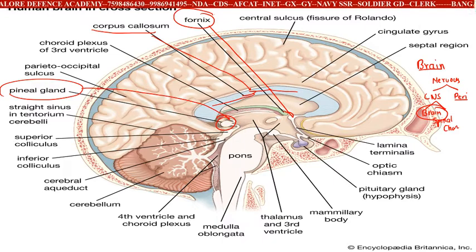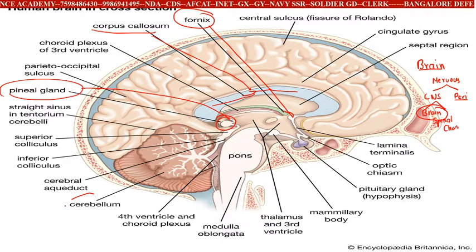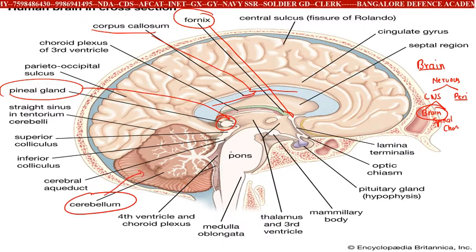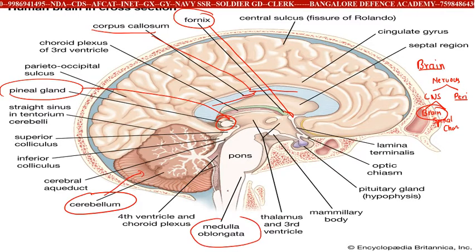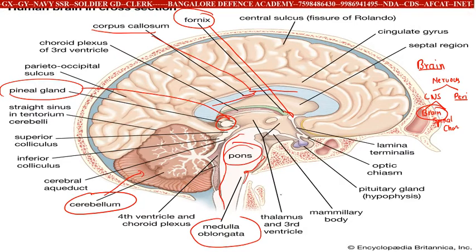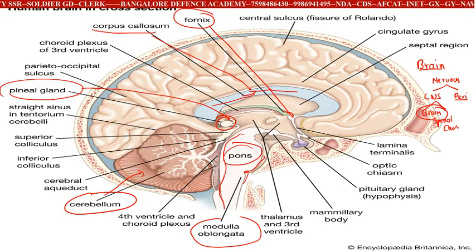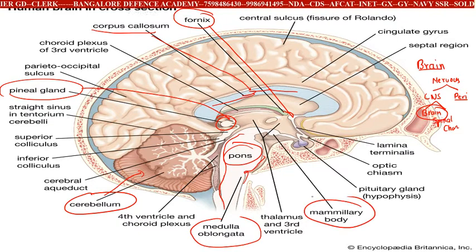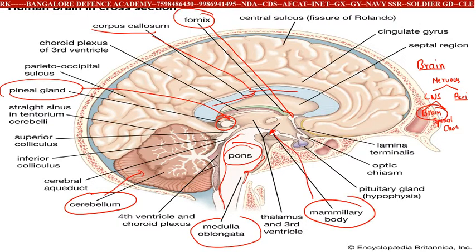Next you have the cerebellum — this is an important part. Next you have the medulla oblongata; this stick-like part is called the medulla oblongata. Next you have the pons. Next you have the mammillary body, which is called the mammillary body.